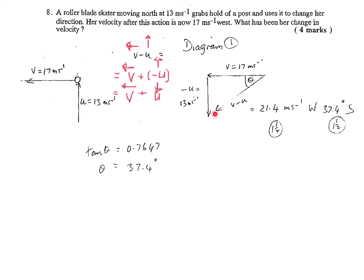So yes, you do get a resulting velocity of 21.4m per second. Now when it comes to the direction, we need to find this angle theta.